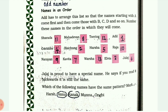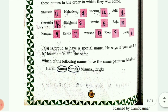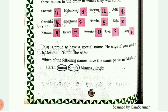Can you find which of the following names have the same pattern? Mark with a tick. I have circled: Anna - A, N, N, A - if you write it backwards you get the same word. The next one is Kanak. Thank you.